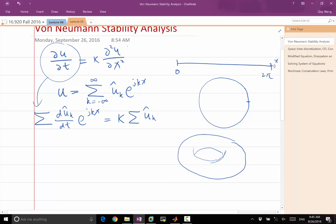And the right-hand side becomes kappa times summation of u hat k. When you take twice derivative, the jk comes out of the exponential two times.